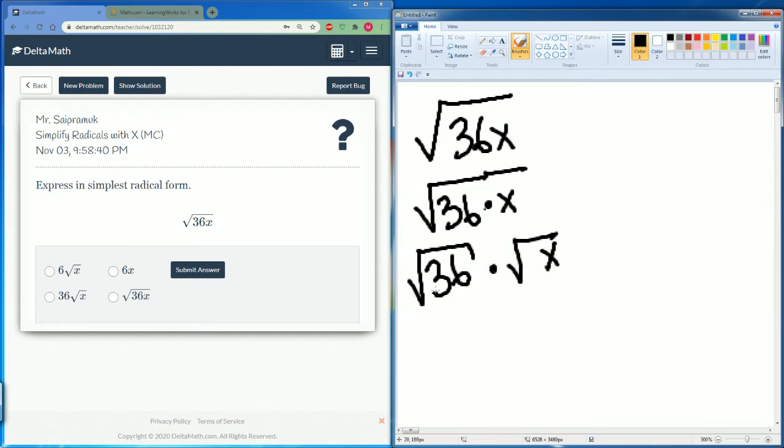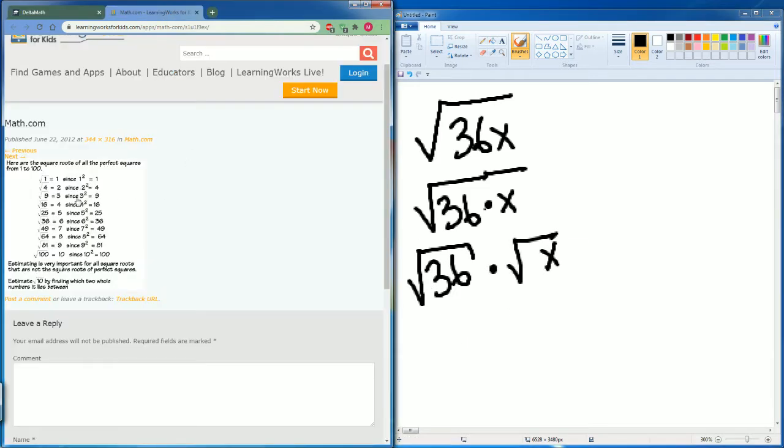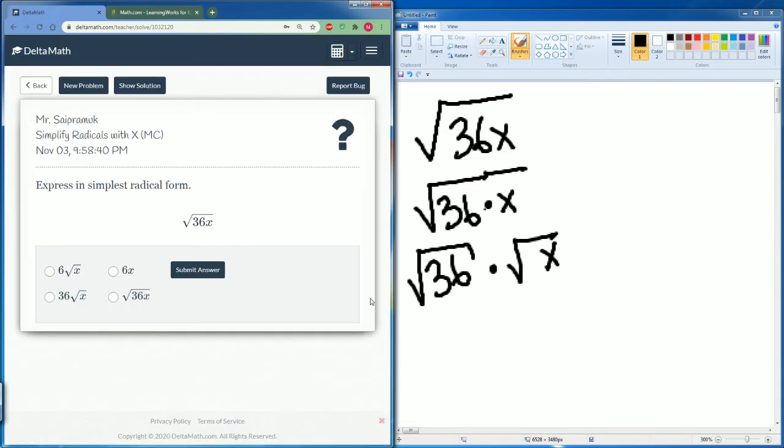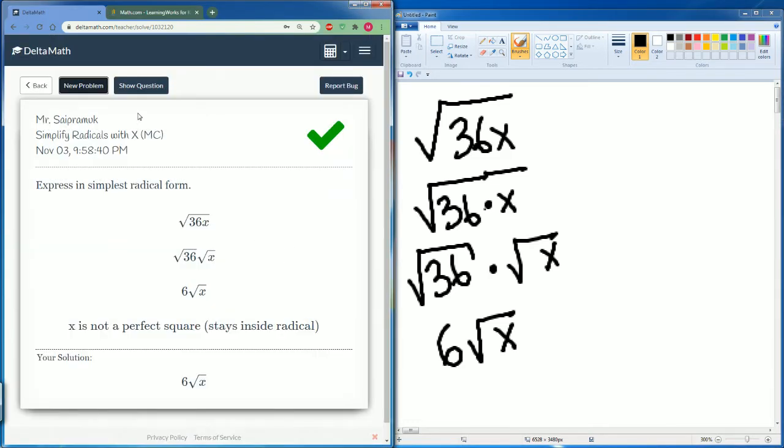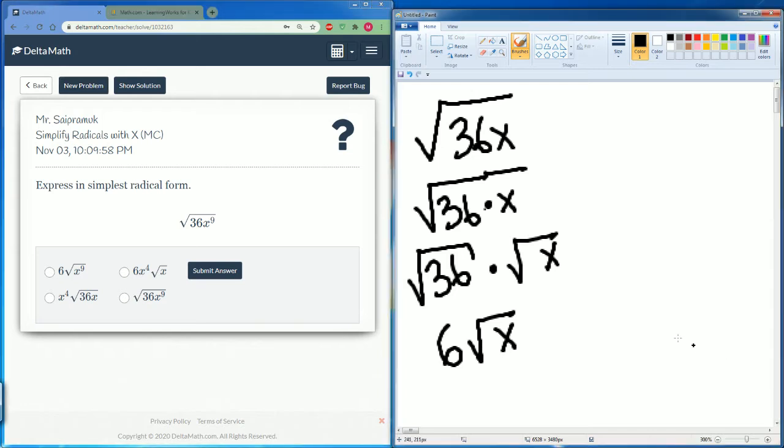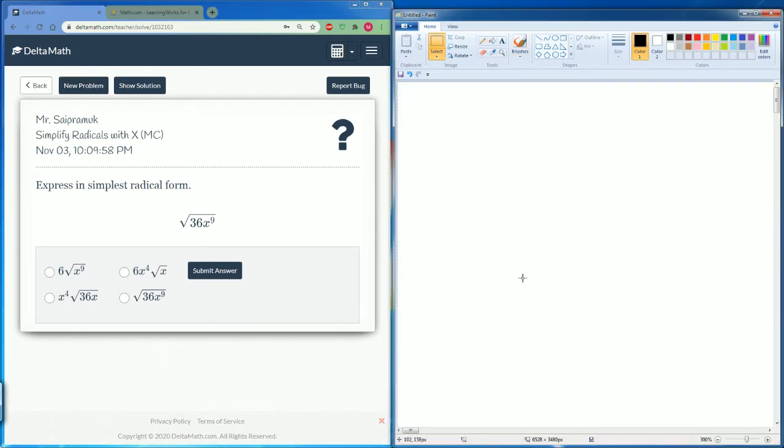We know that radical 36 is equal to 6 because that is a perfect square, so this can just be 6. Radical x cannot be simplified, so the final answer is 6 radical x.